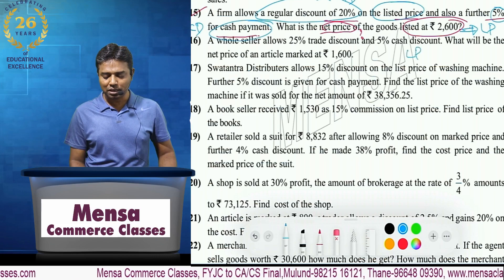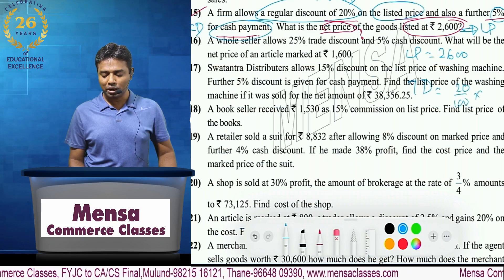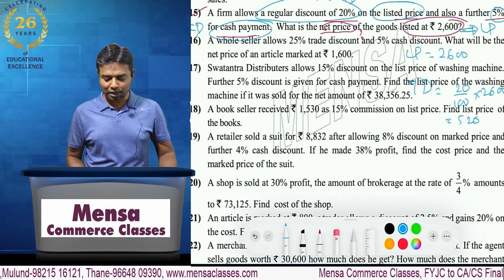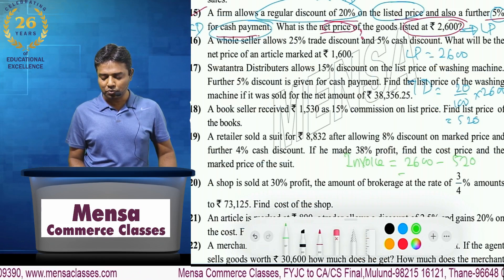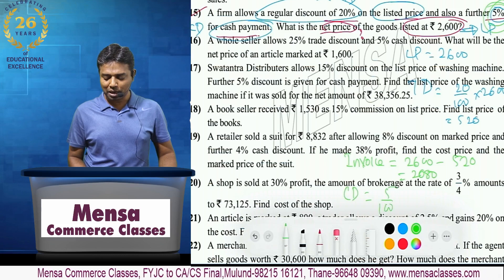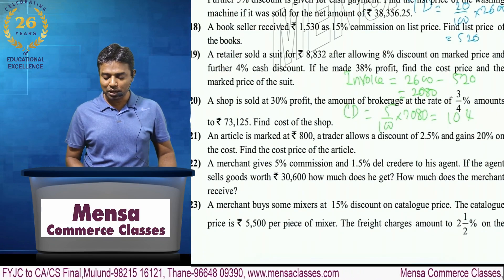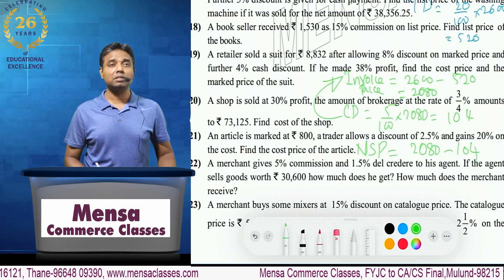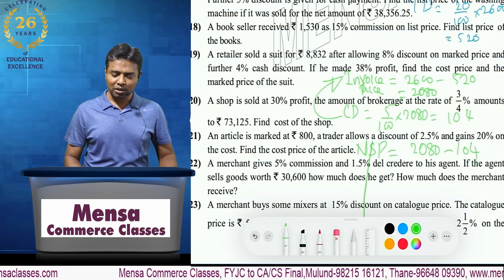So, humara list price 2,600. Ispe ham trade discount find out kareenge — 20% kareenge, toh 520 aayega. Isko list price se minus karayenge — humko milega invoice price: 2,600 minus 520 = 2,080. Iske upar 5% cash discount nikalunga — 5 by 100 into 2,080 = 104. Cash discount ko invoice price se minus karunga — mujhe mil jayega net selling price: 2,080 minus 104. Ekdam straight forward question hai.